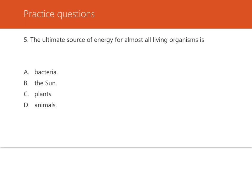Question five: the ultimate source of energy for almost all living organisms is what? It's the sun. In the process of photosynthesis, plants absorb light energy from the sun and store that energy in the bonds of the sugar they produce. This energy is then transferred to other organisms — the consumers that feed upon the plants. So that ultimate source of energy comes from the sun.